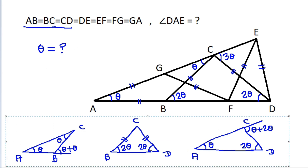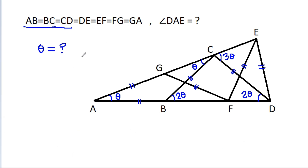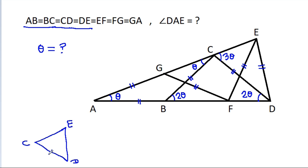And now we have CD is equal to DE. So in triangle CDE, CD is equal to DE, and this angle is 3 theta, so this angle will also be 3 theta. This angle will be 3 theta.